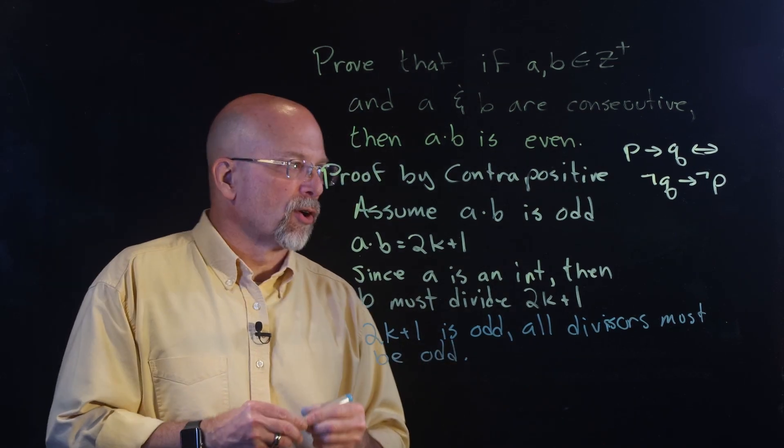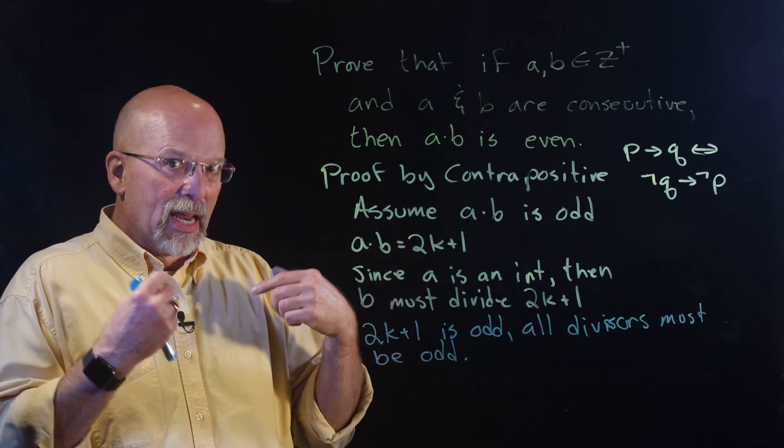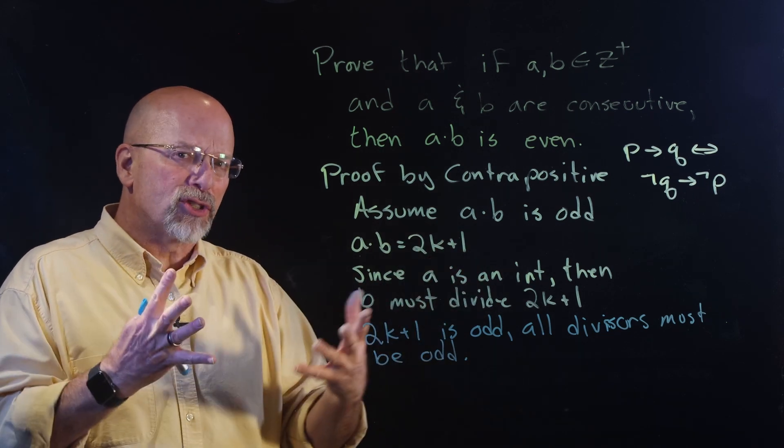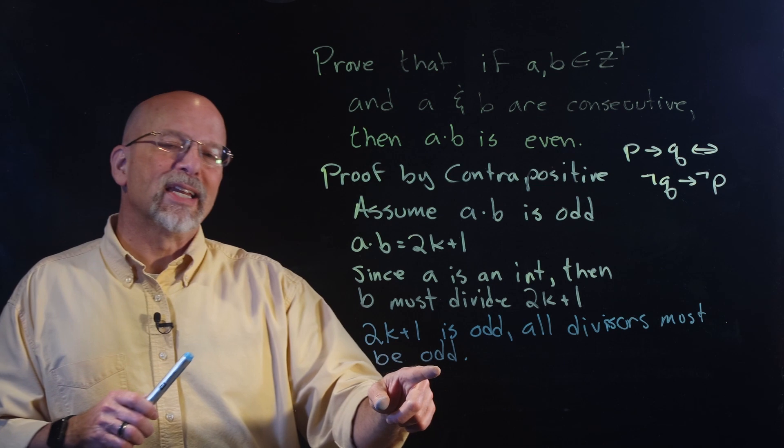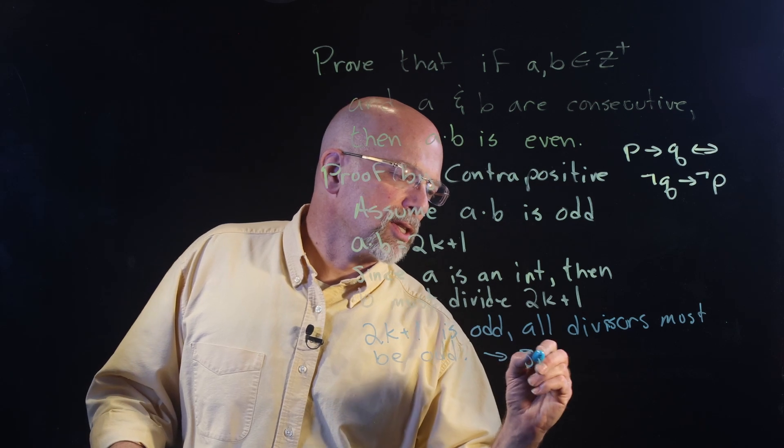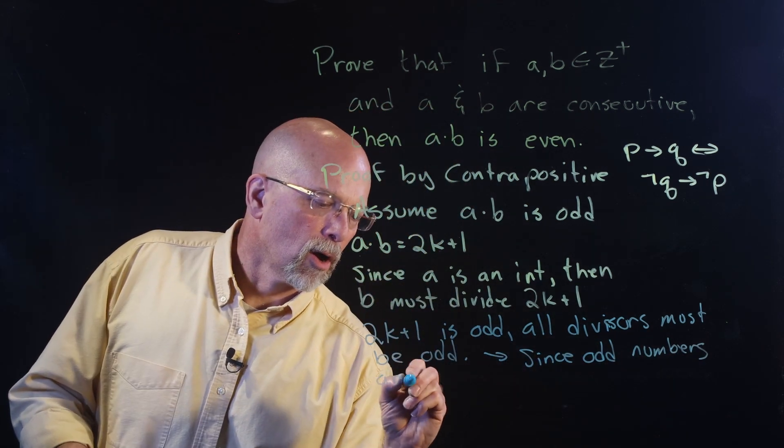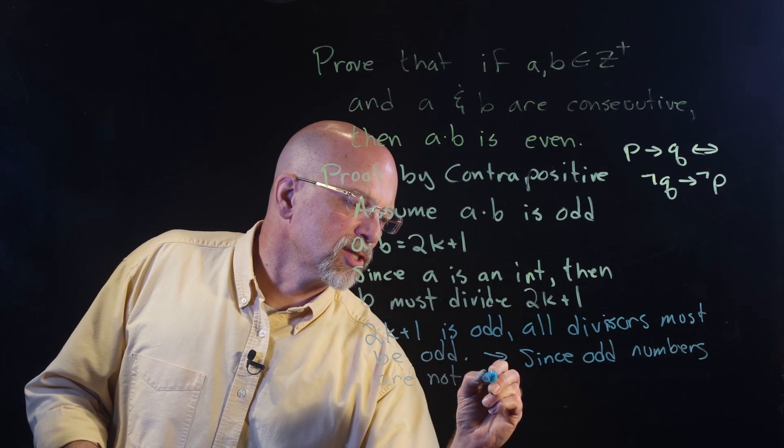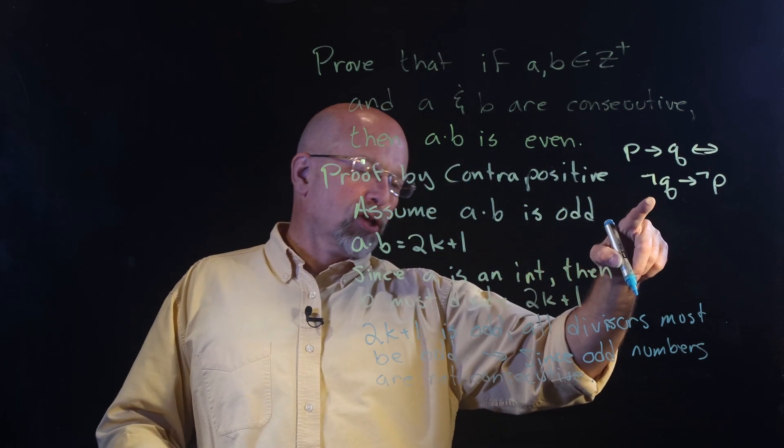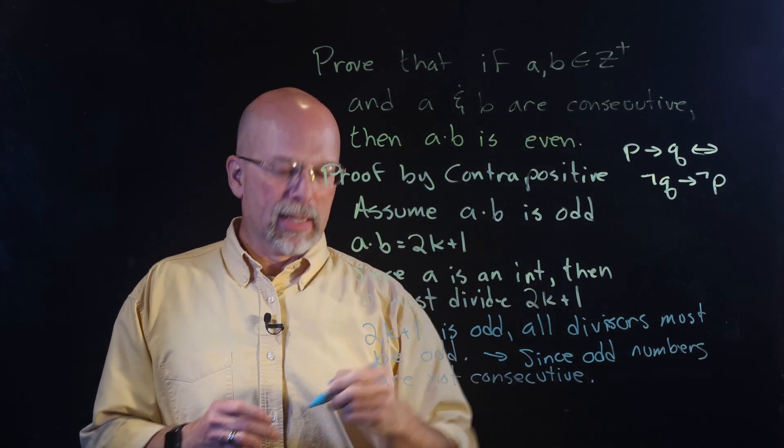We also proved that earlier. We proved that earlier by showing that, first of all, if one of the divisors is even, then it has a factor of two, which means that this 2k plus one also must have a factor of two. Well, when have you last seen two odd numbers that are consecutive? So, since odd numbers are not consecutive, that gives us not q implies not p, because p required a and b to be consecutive.